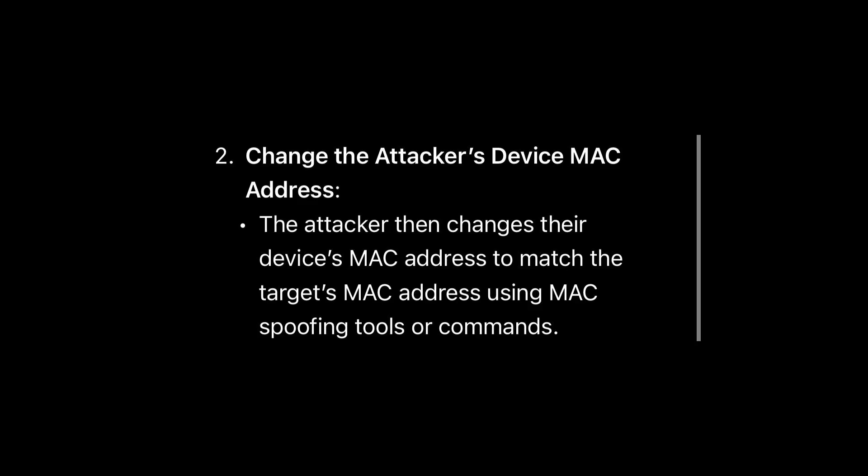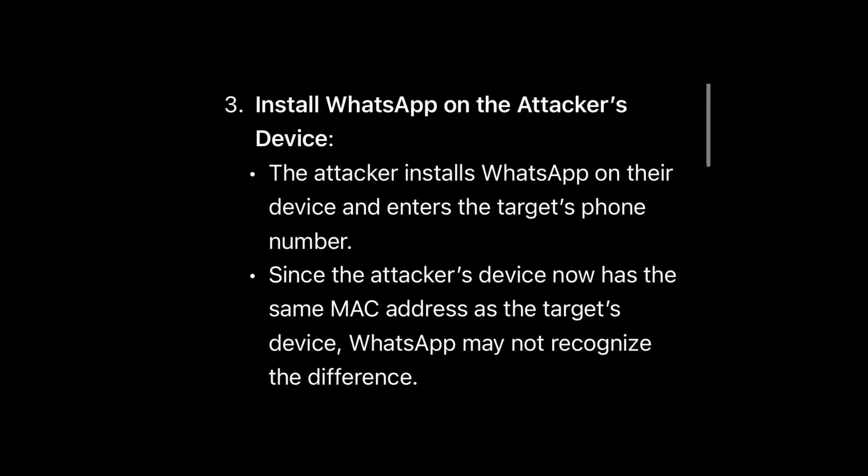The second step is to change the attacker's device MAC address. The attacker changes their device MAC address to match the target's MAC address using MAC spoofing tools or commands, making sure their MAC address is the same as the target's. The third step is to install WhatsApp on the attacker's device.